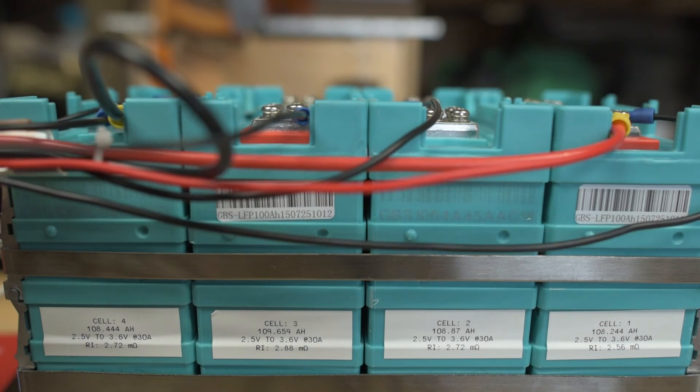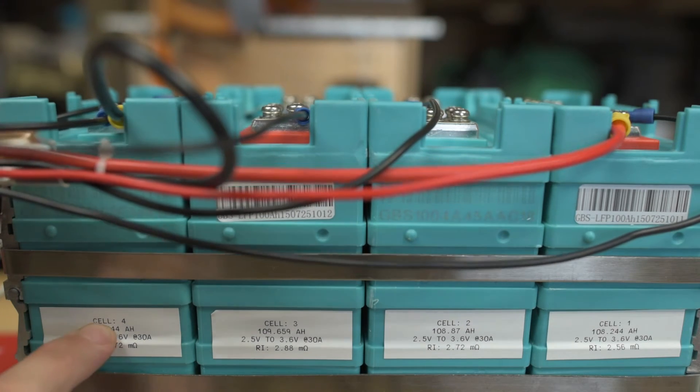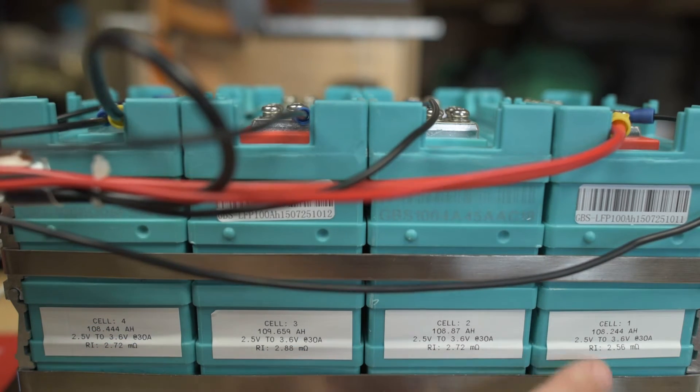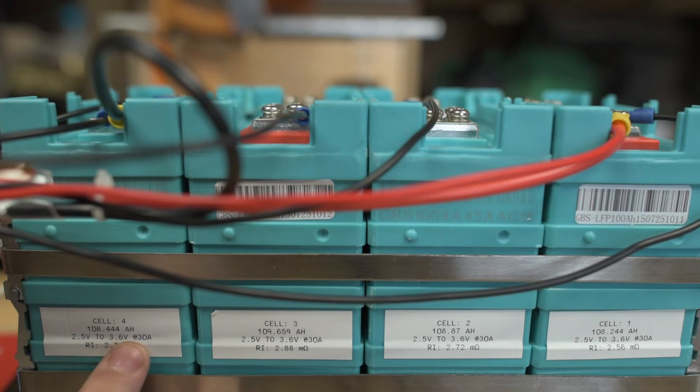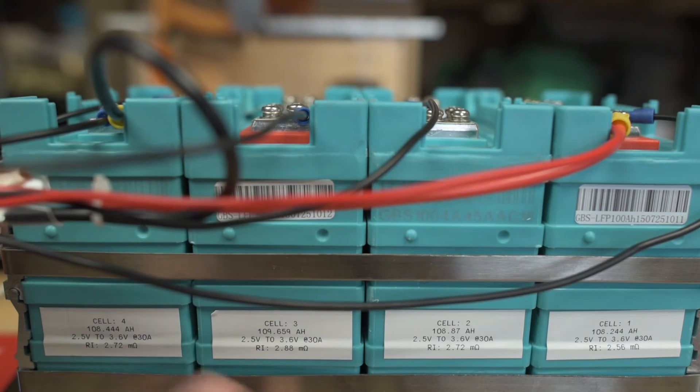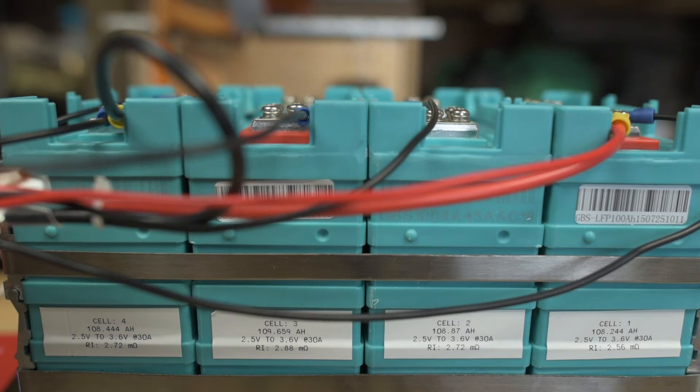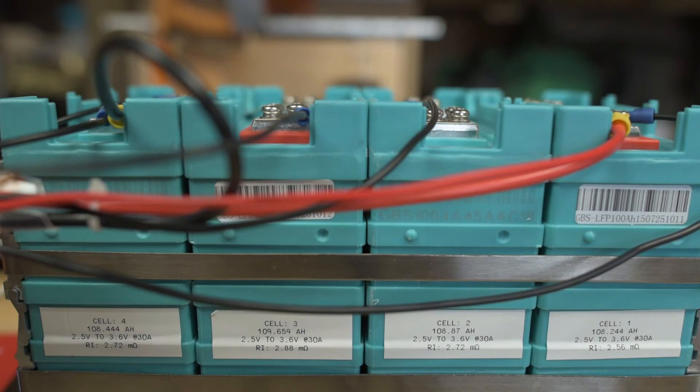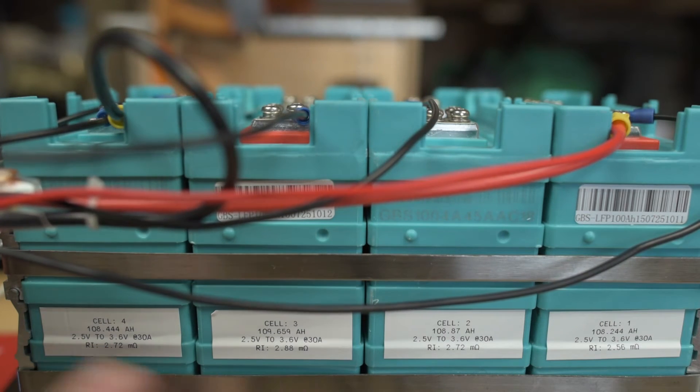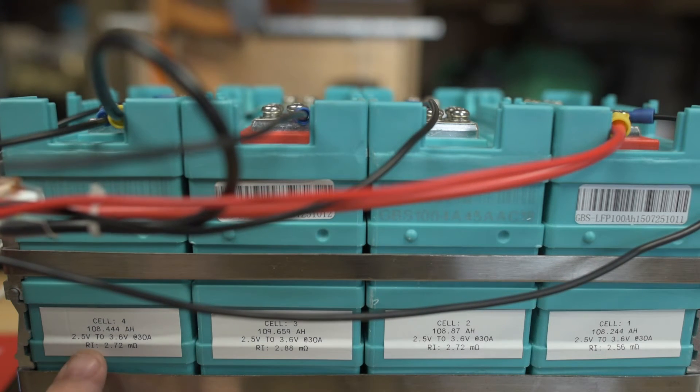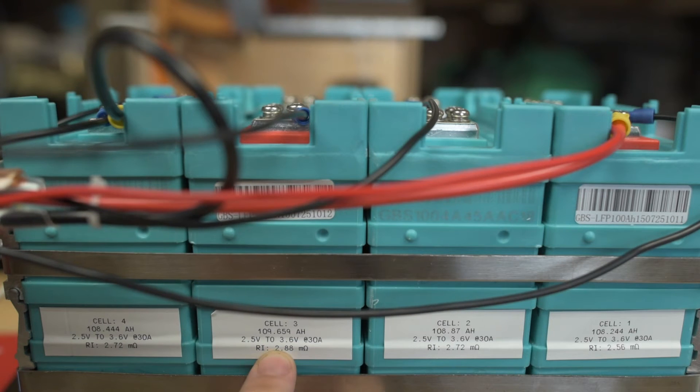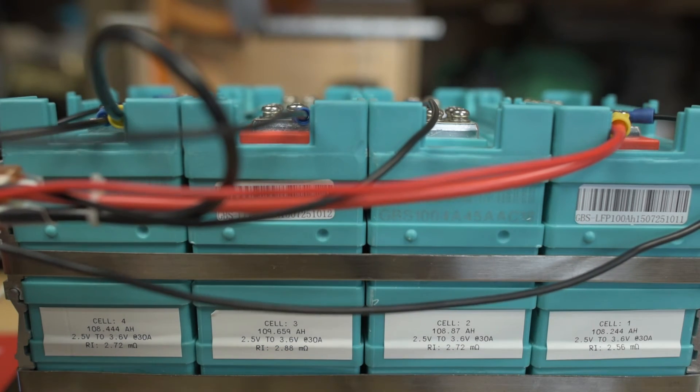And here's the finished product after my labels have been made. You'll see that I have each cell labeled, cell 4, 3, 2, and 1. I've got my amp hours listed for each individual cell. And I also have recorded here, just in case I forget, the testing parameters for the amp hours. So this was 2.5 volts to 3.6 volts at 30 amps. I remember for this particular graph, there was a flat spot on the high knee, and I believe there was a little bit of overcharge there. So this is probably not actually a 108 amp hour cell. It's probably a little bit less than that, but hopefully the measurements are still relatively accurate. My internal resistance is labeled as RI, so 2.72 milliohms, 2.88 milliohms, 2.72 milliohms, and 2.56 milliohms.